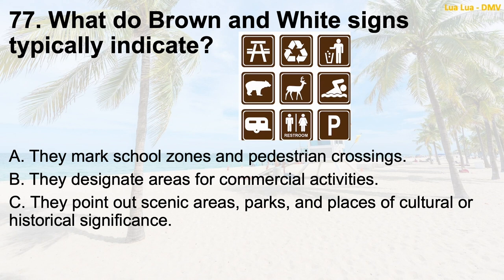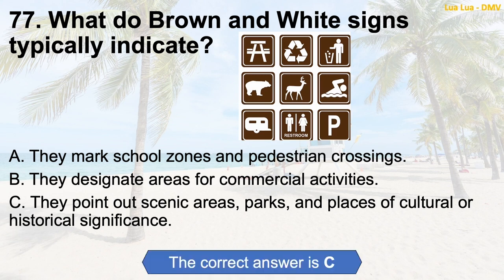Question 77: What do brown and white signs typically indicate? A. They mark school zones and pedestrian crossings. B. They designate areas for commercial activities. C. They point out scenic areas, parks, and places of cultural or historical significance. The correct answer is C: They point out scenic areas, parks, and places of cultural or historical significance.